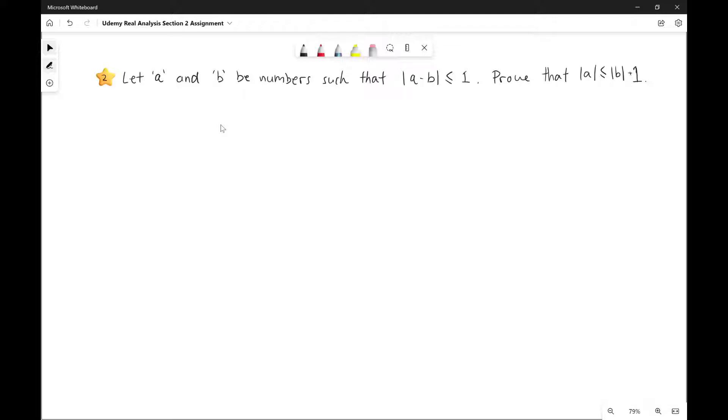Let A and B be numbers such that the absolute value of A minus B is less than or equal to 1. We want to prove that the absolute value of A is less than or equal to the absolute value of B plus 1.